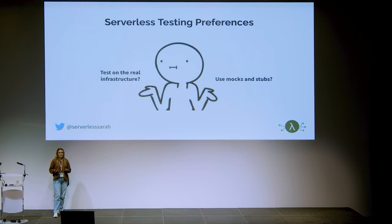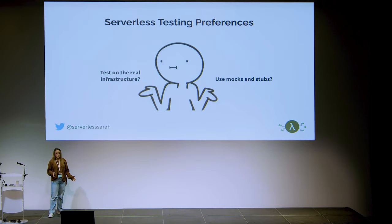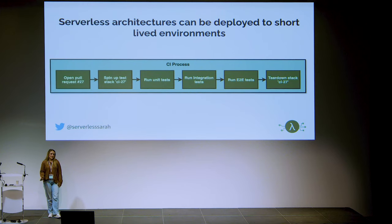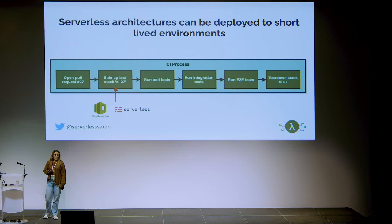There's the question of whether we test on the real infrastructure or using mocks and stubs. We tend to test on the real infrastructure — we want to test on something exactly the same as production. We might use mocks and stubs for failed test cases, something not normal that we can't rely on just happening. There are also assumptions we might make with mocks that could cause tests to pass when they shouldn't. So we test on the real infrastructure, and we put this into our CI process: when we open a pull request we spin up a test stack using CloudFormation and Serverless Framework — though you can use SAM, CDK, or whatever suits you best.